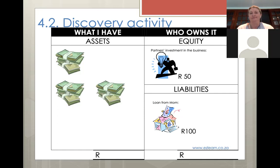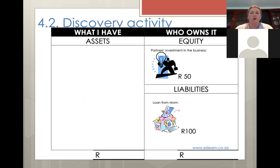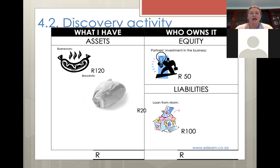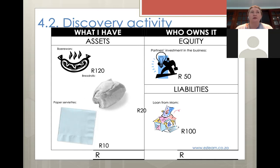How do you think you'll record that? The boerewors would be an asset because if you're selling it you're making money - yes. So first we're going to take money out of the tupperware, and what we're going to buy - the boerewors is an asset, the fresh rolls are assets, and the paper serviettes are assets too. Although these will get used up, right now they are assets of the business because we're going to be able to sell them. We actually call them inventory or trading stock - the things we're buying and selling.